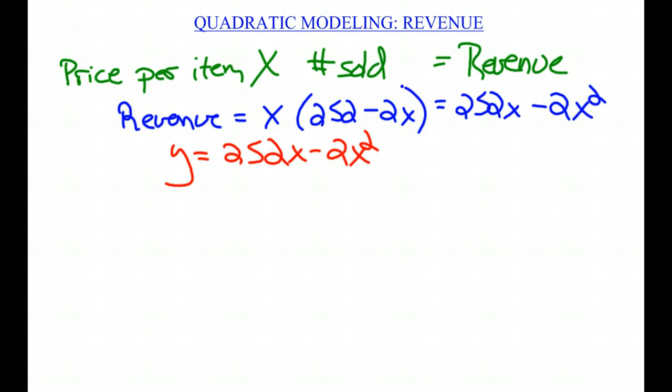So we have to ask, where's the vertex? For me, this one is easy enough to solve if you factor it out. If you factor this, the result is 2X times (126 minus X).